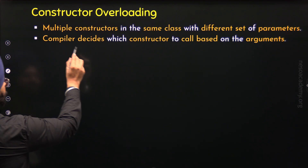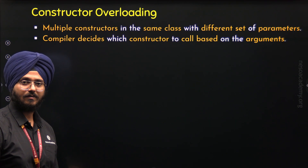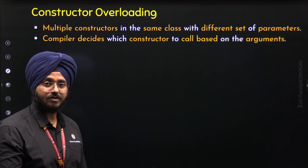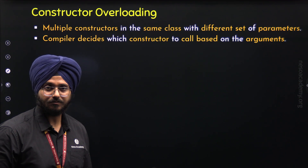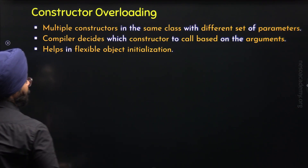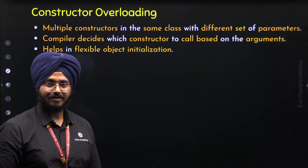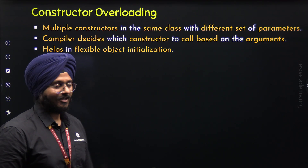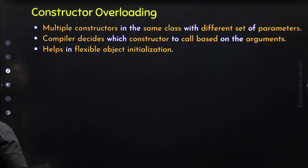Also, the compiler decides which constructor to call based on the arguments. Based on the arguments we pass via the object, a specific constructor will be called, and this is decided by the compiler. It helps in flexible object initialization — if we can define multiple constructors within a class, we would be able to initialize objects in different ways, and therefore it leads to flexible object initialization.